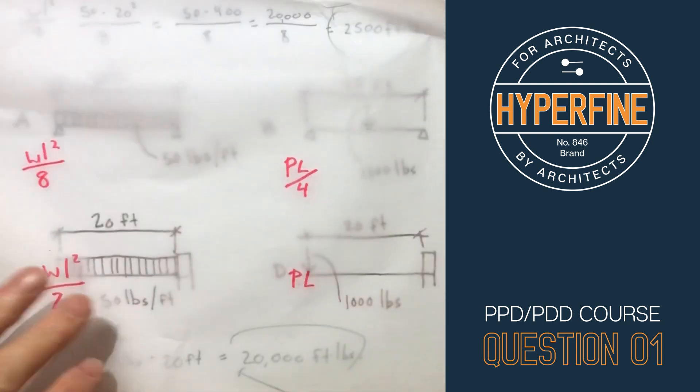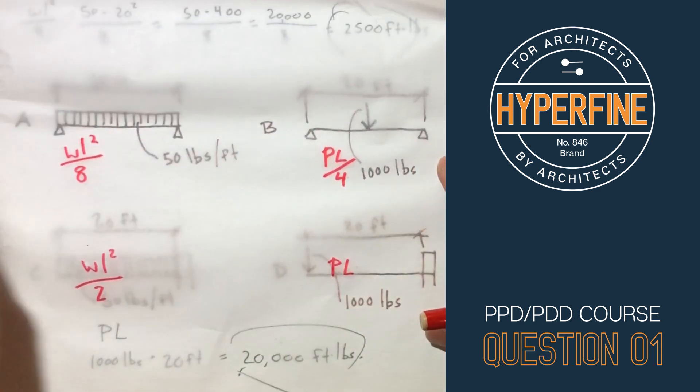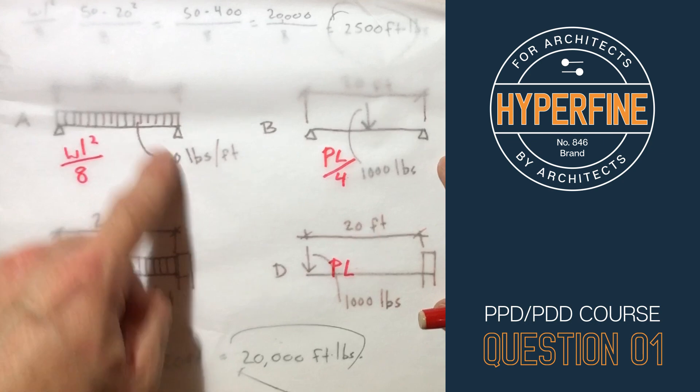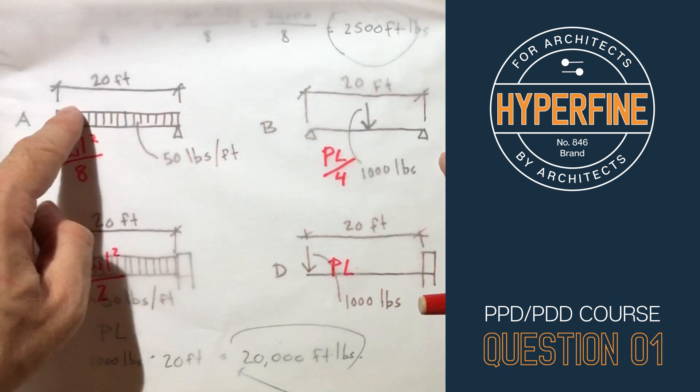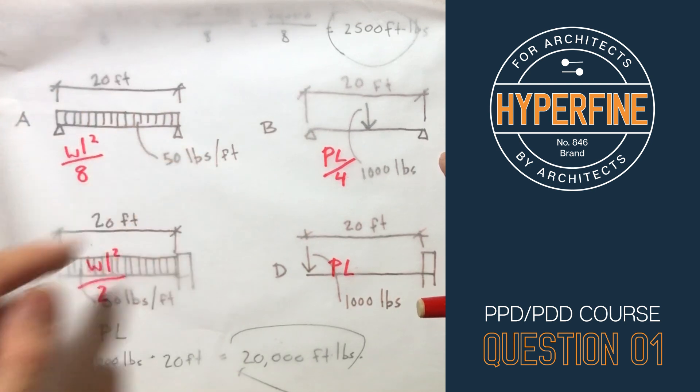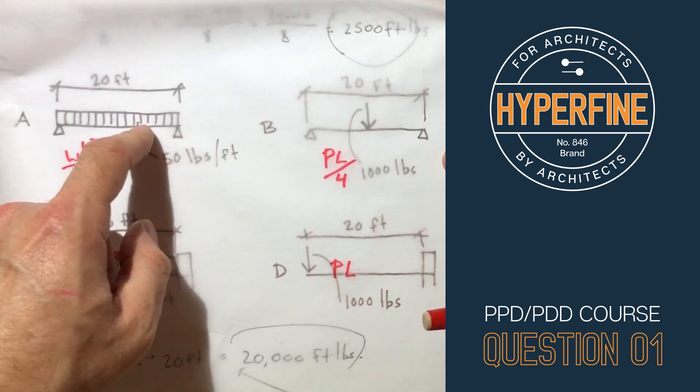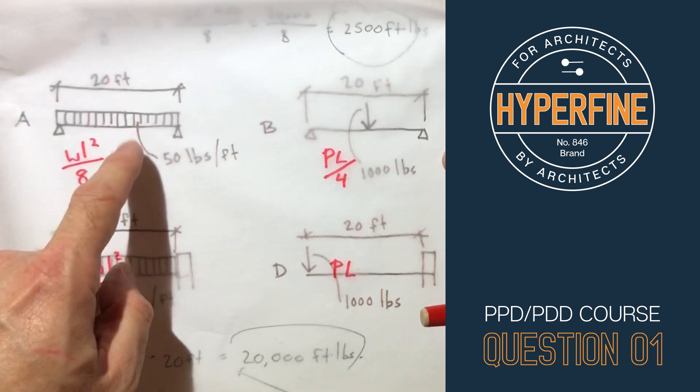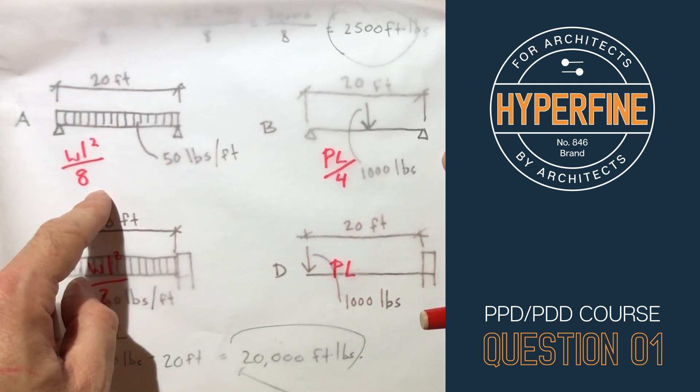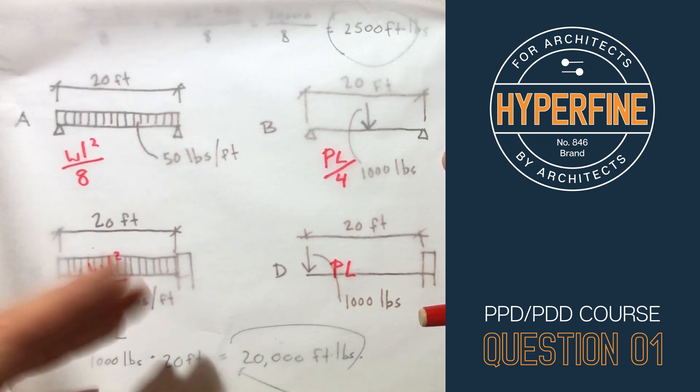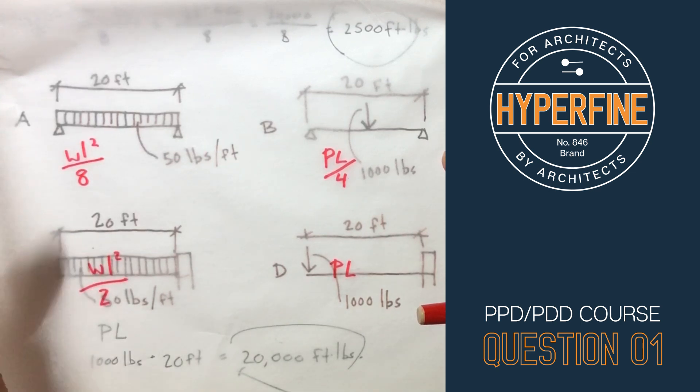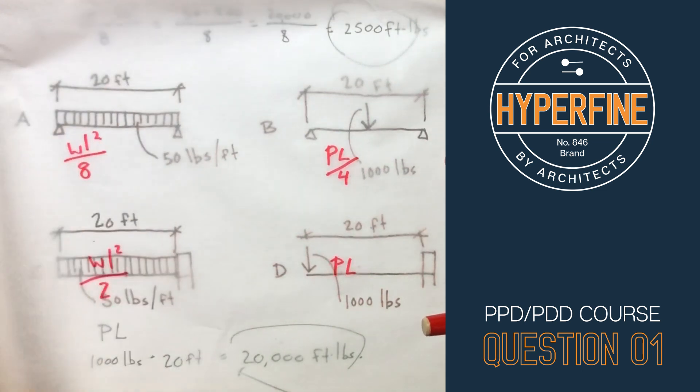One more thing to note when we're talking about max moments, you can see there's nothing in these formulas that refers to anything about the material or the size of the beam. It's only what the load is on it and where the supports are. So whether this beam was steel or wood or concrete it would have the same max moment. We know it's going to deflect different but that's a different formula. When you're discussing moments, the material and shape of the beam doesn't matter, just the weight and support.